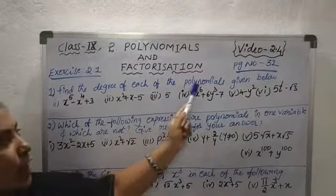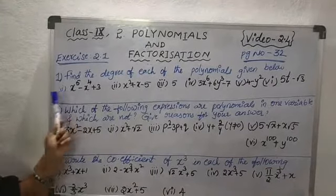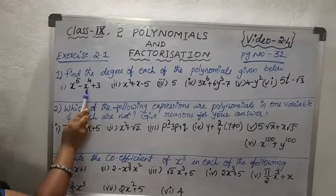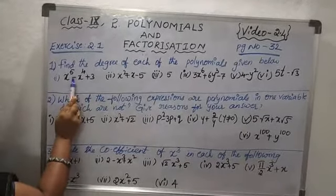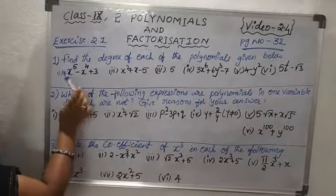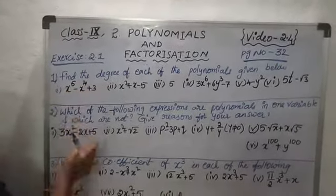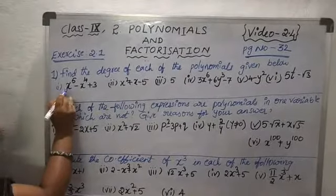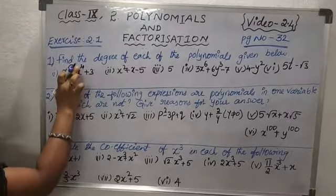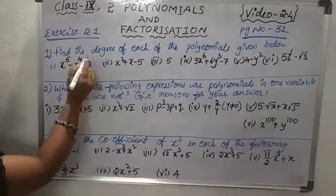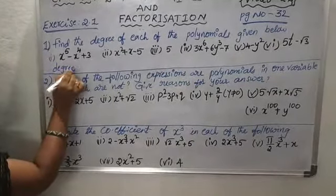We should find the degree of each of the polynomials. The first question — total how many terms are there? Three terms are given, because terms are defined by plus or minus symbols. Two symbols means the polynomial has three terms. To find the degree, take the highest degree of each term. Here the degree is 5, here the degree is 4, and there is no variable so degree is 0. The highest degree is 5, so degree equals 5.